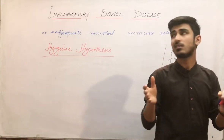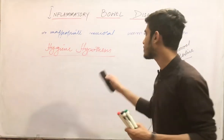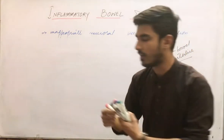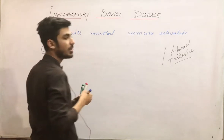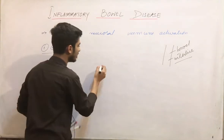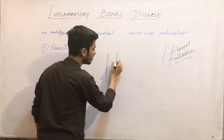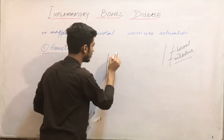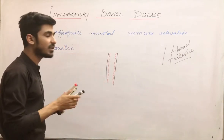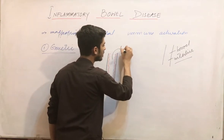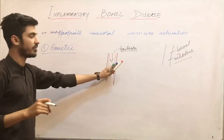Now we are moving on to the pathogenesis of this disease — how inflammatory bowel disease develops. There are certain pathogenic factors. First of all, we have the genetic factor. Normally, this is your intestine, this is the lumen of the intestine, and this is your mucosa — the mucosal lining of the intestine. Normally, there are certain bacteria that remain in the lumen of the intestine; the bacteria are present in the lumen.